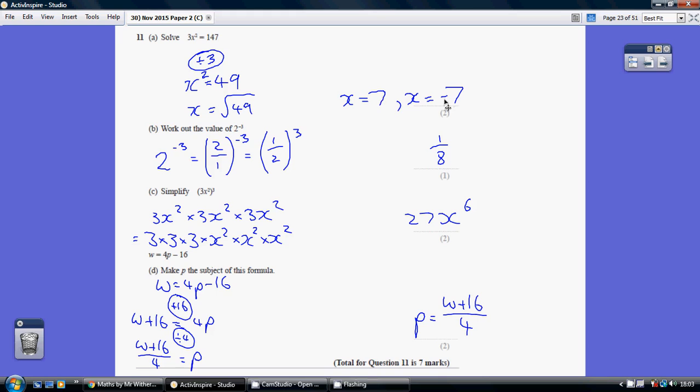But just be careful minus 7 times minus 7 is also 49. So the square root of 49 is both 7 and minus 7. And you had to give both to get both marks.